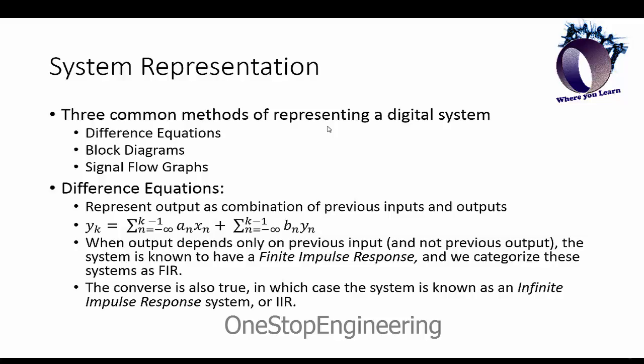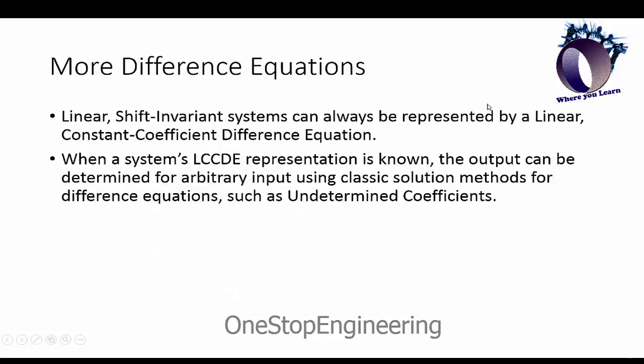We'll talk about why that is later, but it is an important categorization. Finite impulse response means there's no feedback in the system, and an infinite impulse response system or IIR means that there is feedback in the system, meaning that these b coefficients here in the difference equation are non-zero in an infinite impulse response system, whereas they are all zero in a finite impulse response system. Linear shift-invariant systems can always be represented by a linear constant coefficient difference equation, and when a system's difference equation is known, the output can be determined for arbitrary input using classic solution methods for difference equations such as the method of undetermined coefficients.